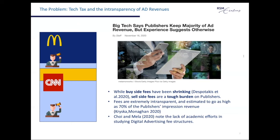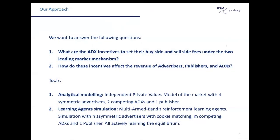While the topic of intermediary fees in programmatic advertising markets has received significant attention from practitioners, academic research has so far substantially neglected the issue, as noted in a recent literature review by Choi and Mela. In our paper we want to understand the incentives for ad exchanges when setting buy-side and sell-side fees under both the legacy waterfall mechanism and the newer header bidding, and how this translates into the welfare of advertisers and publishers. We build an analytical model with one publisher, two competing ad exchanges, and two advertisers in each ad exchange, and complement our analysis with a learning agents simulation where all actors autonomously learn equilibrium strategies.